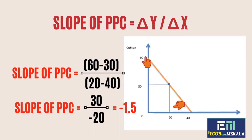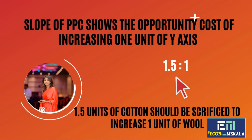If somebody wants to find out what the ratio 1.5 to 1 means — that means the opportunity cost of producing one unit of wool is 1.5 units of cotton.